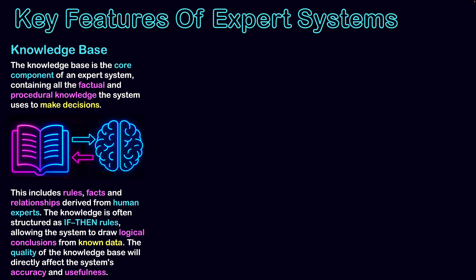We know this from AI systems in our modern era — they are an accumulation of knowledge responding to our inputs with procedures to respond correctly. The knowledge is often structured as if-then rules: if a certain variable is true or false, it follows a different pathway to a different outcome, allowing the system to draw logical conclusions from known data and built-in algorithms. The quality of the knowledge base directly affects the system's accuracy and usefulness. We want high-quality knowledge bases derived from human experts — through primary or reliable secondary sources — building a strong factual foundation for decisions.